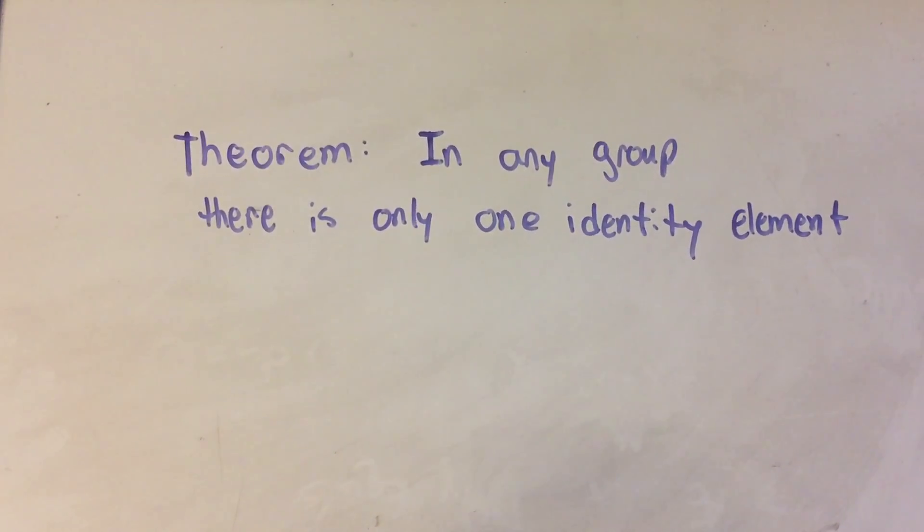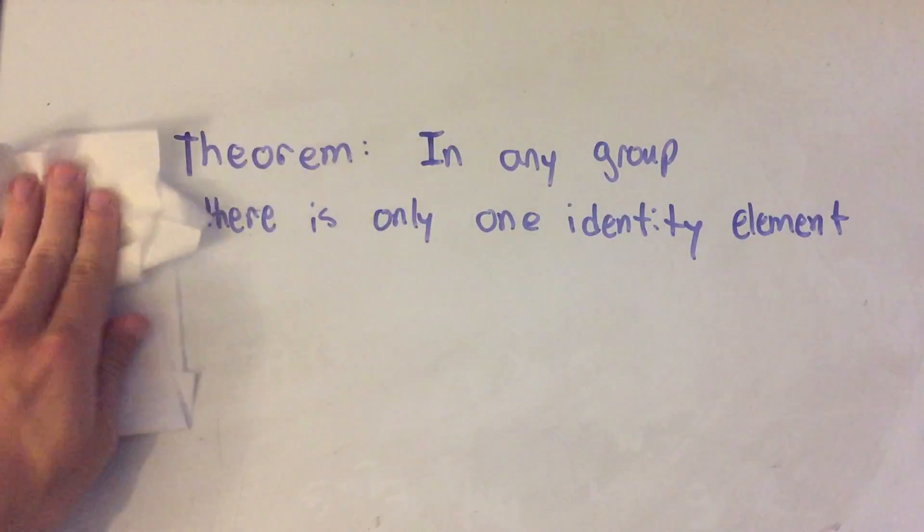Hi everyone, welcome to this video. I'm going to prove this theorem that take any group you want, there is only one identity element. So what that means is that the identity element is unique in any group that you have. So let's prove this thing.